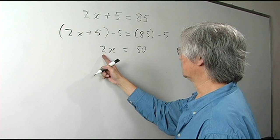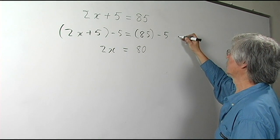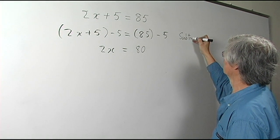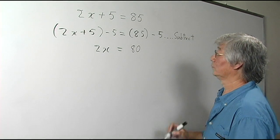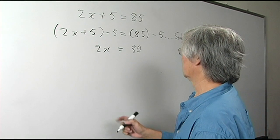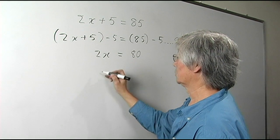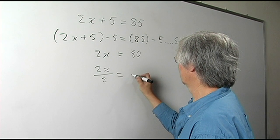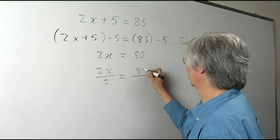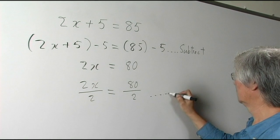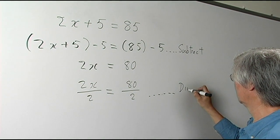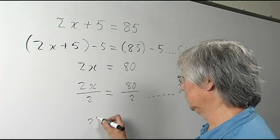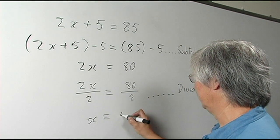Then the next operation — here we subtracted. Now we're going to do something else: we're going to divide by 2 on both sides. The 2s cancel out, and you're left with x equals 40.